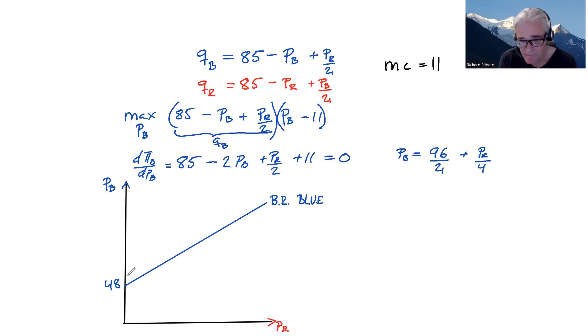Okay, so let's move over to red. So its profit maximization problem would be exactly symmetric. So we'll see it maximizes by choosing PR. So 85 minus, oh, PR. Sorry, as it's red, PR plus PB over two times PR minus 11, like that.